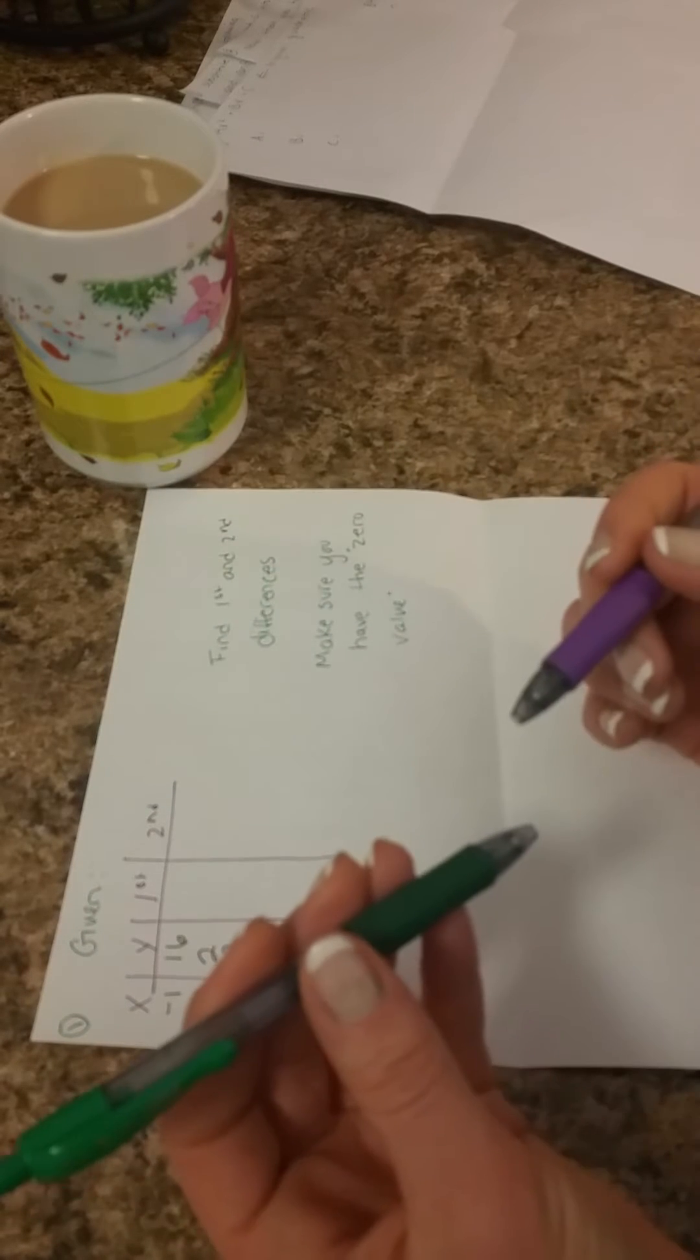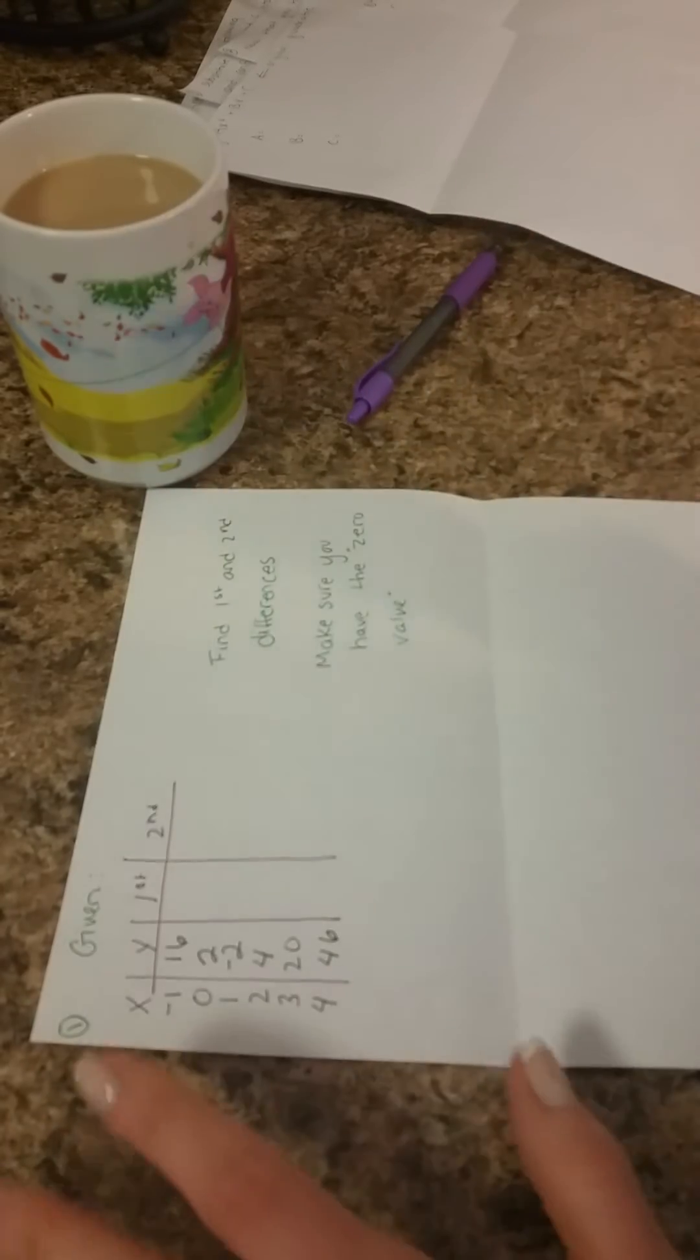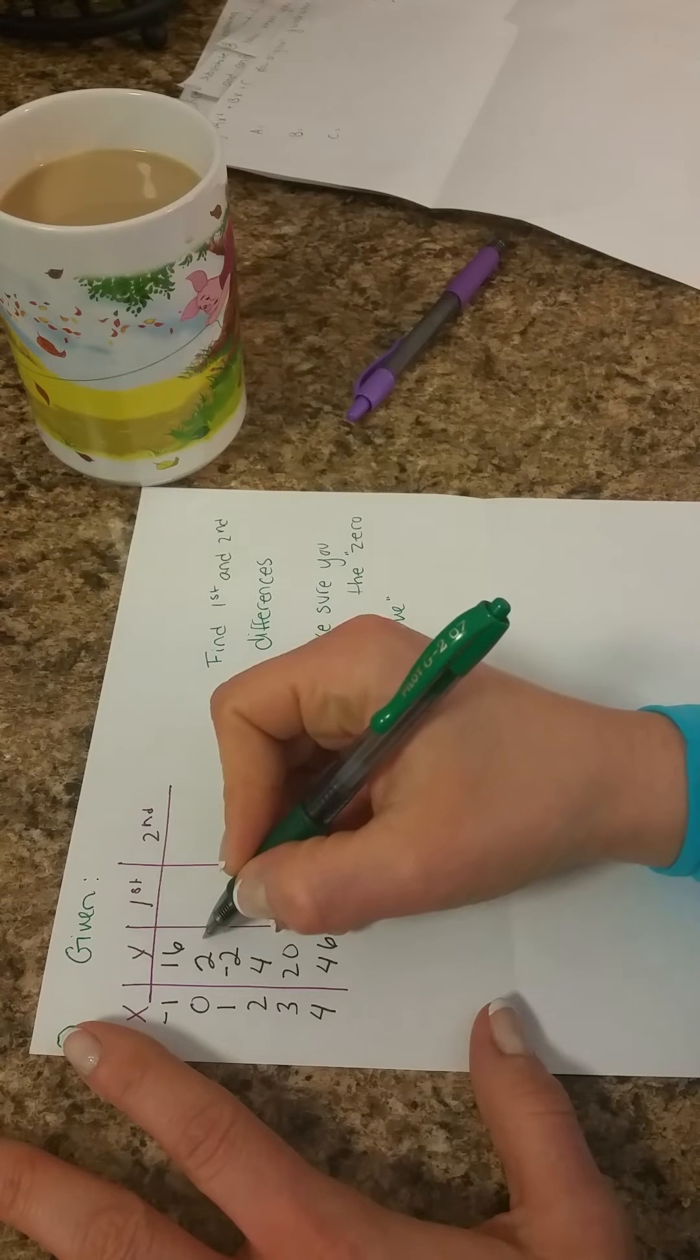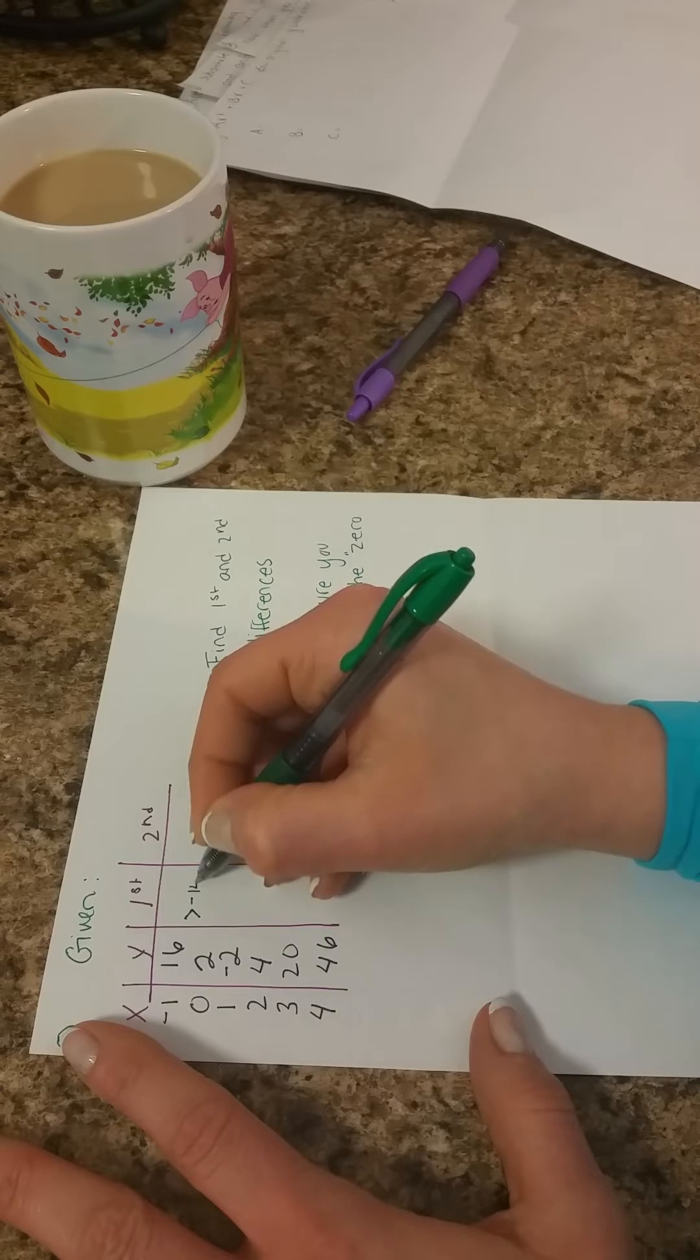So let's see, purple or green. Let's just use green. I'm going to go wild. So 16 to 2 is minus 14.